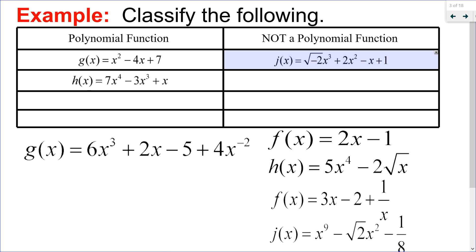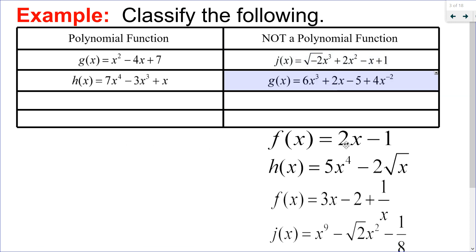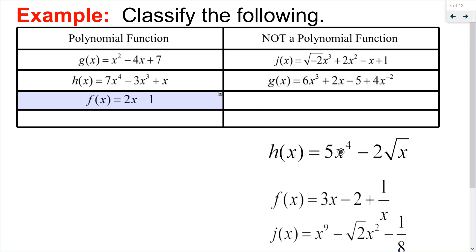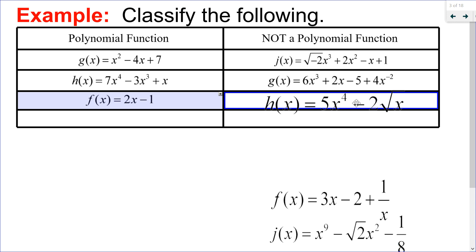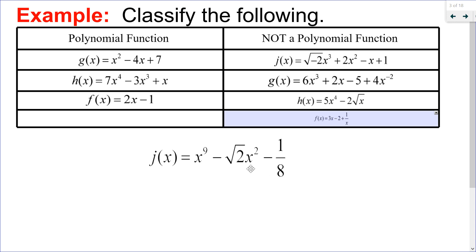Looking at g of x, it has real number coefficients, but the exponent of negative 2 is not a whole number, so that makes it not a polynomial. f of x here is a polynomial — that's a rational function. h of x is not a polynomial because it has the square root of x, which has an exponent of one half. This f of x is not a polynomial because x is in the denominator, which means x has an exponent of negative 1. And lastly, this one is a polynomial — the square root of 2 is an irrational but real number, and all exponents are whole numbers.